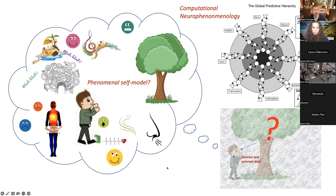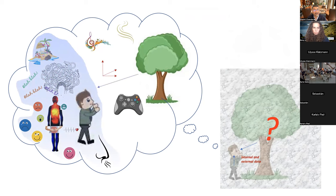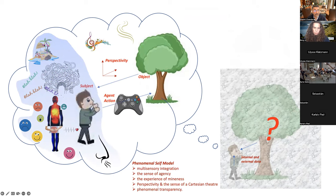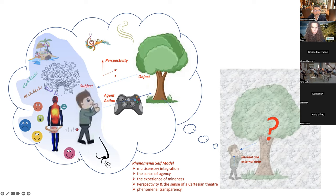The contents of the generative model are organized into a subject-object duality. Everything in the blue area here is within a subject - there are internal interoception, exteroception, a certain perspectivity, a subject-object relationship, a notion of agency, multi-sensory integration, a sense of mineness, a kind of sense of a Cartesian theater. These are all constructions, and we're not really aware of the fact that there is this phenomenal self-model - that's called phenomenal transparency, according to philosopher Thomas Metzinger.